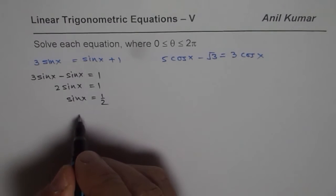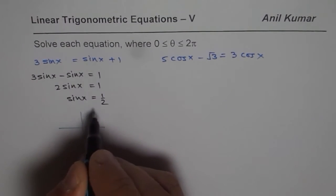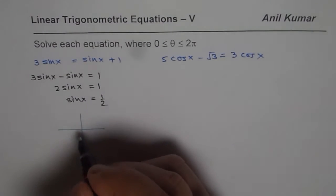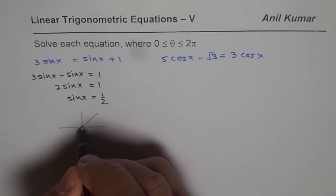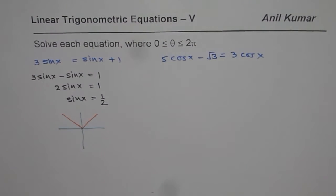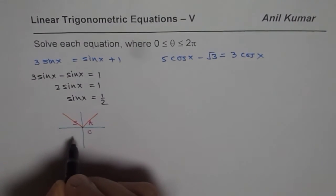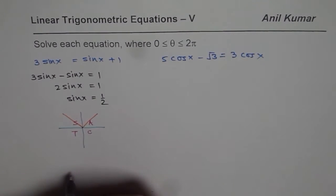Since we are looking for sin(x) to be half, that means we are looking for 2 solutions and these 2 solutions should be in quadrant 1 and in quadrant 2. Reason is that the rule. So all are positive in quadrant 1, sin in 2, tan in 3, cosine in 4.